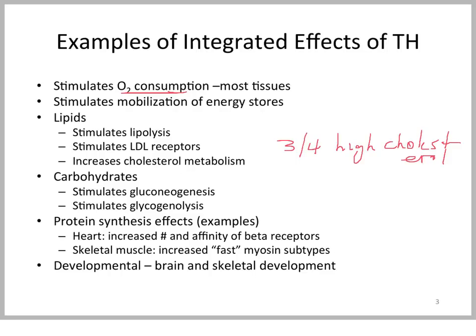Thyroid hormone's action on carbohydrates in normal physiological conditions is to stimulate gluconeogenesis and glycogenolysis, so there's a catabolic effect. Yet thyroid hormone also has very tissue-specific effects that alter certain types of proteins.